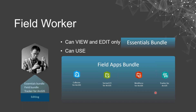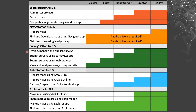We have a question from Vivian who asks whether the field worker named user has the ability to create and publish Survey123 surveys. The short answer is not exactly. In order to create and publish Survey123 surveys you need a creator user level or above — creator or GIS Pro. To use the Survey123 native application you need a field worker and above, including offline work. To use it via web browser you need editor and above. So to design, manage, and publish Survey123 surveys you need a creator level license or above.